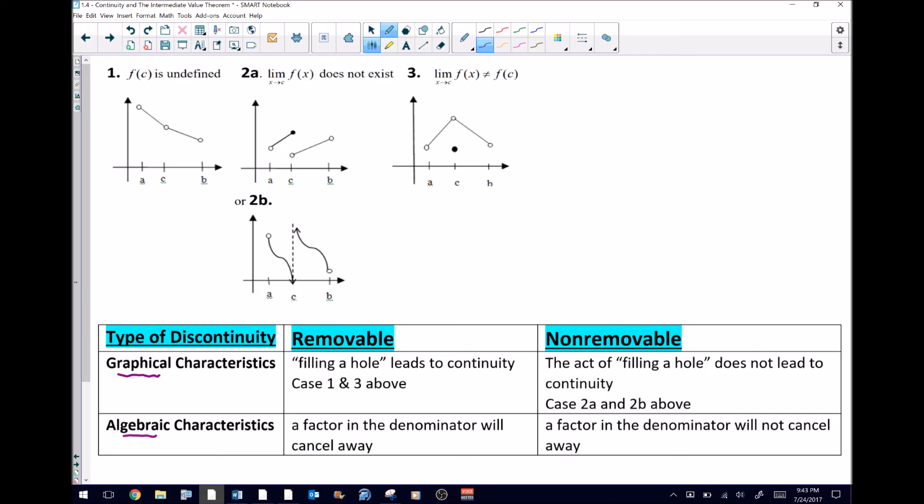If you've got a graph that you're looking at to determine the type of discontinuity, it's pretty easy. If you can fill a hole and that would lead to the function being continuous, then you've got what's called a removable discontinuity. What do I mean by if you can fill a hole? If you look at graph number one, if you have the physical ability to just color in that open circle and thus make the graph continuous, you've got something that's removable.